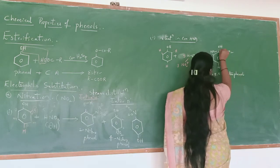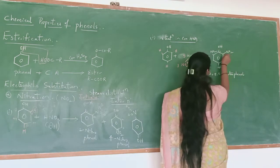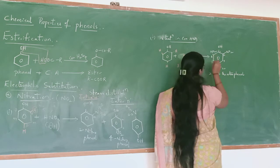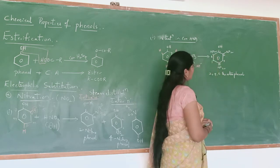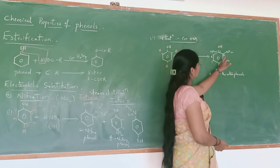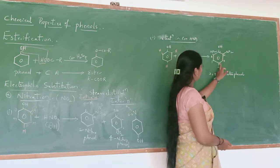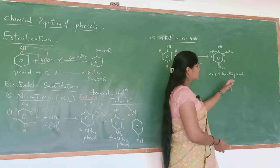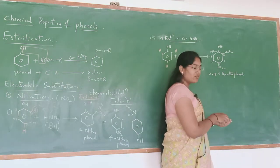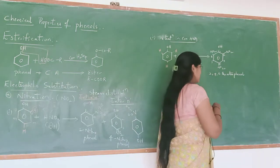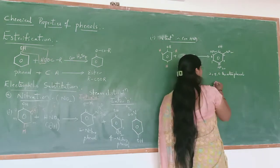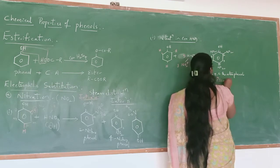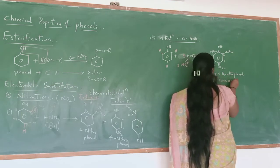So three nitro groups are located at positions 2, 4, and 6. Finally we get 2,4,6-trinitrophenol. This 2,4,6-trinitrophenol is also known as picric acid. This is very important. So the IUPAC name of picric acid is 2,4,6-trinitrophenol.